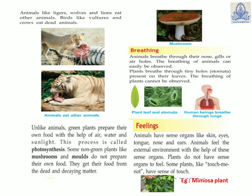Now, feelings: animals have sense organs like skin, eyes, tongue, nose, and ears. Animals feel the external environment with the help of these sense organs. Plants do not have sense organs, but some plants like the touch-me-not — the mimosa plant — have a sense of touch. When you touch this plant, the leaves get folded.